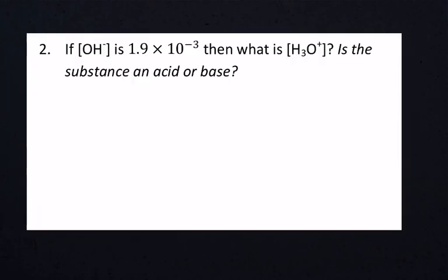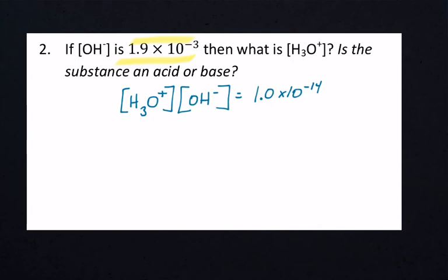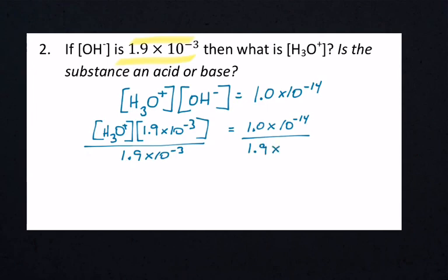Number 2: if the concentration of OH- is 1.9 times 10 to the negative 3rd, what is the concentration of H3O+? Is the substance an acid or a base? Start with the formula. Rewrite it with 1.9 times 10 to the negative 3rd in for OH- times H3O+ equals 1 times 10 to the negative 14th. Divide both sides by 1.9 times 10 to the negative 3rd. Work from the top down: 1.0 times 10 to the negative 14th divided by 1.9 times 10 to the negative 3rd.